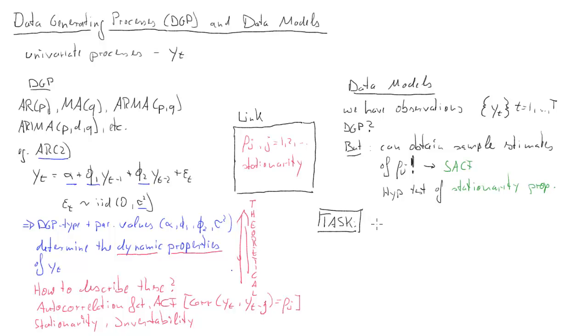It's going to be our first approach. In method A, we will basically attempt to establish or to find that combination of DGP type and parameter values that best matches. Once we have a DGP type and a particular parameter combination that exactly determines the autocorrelation function and the stationarity property.